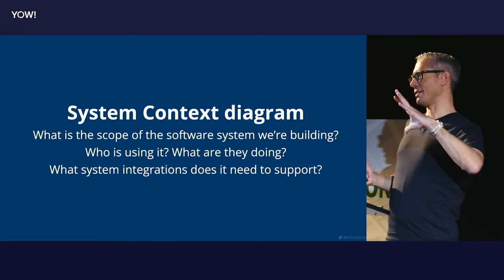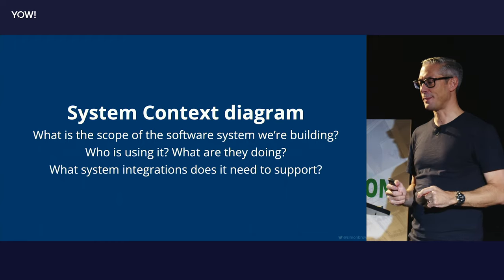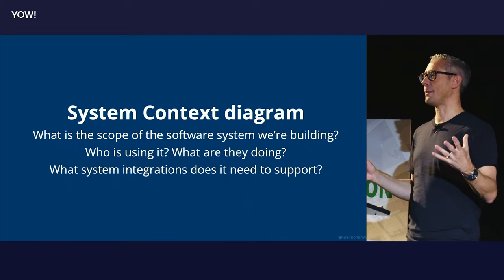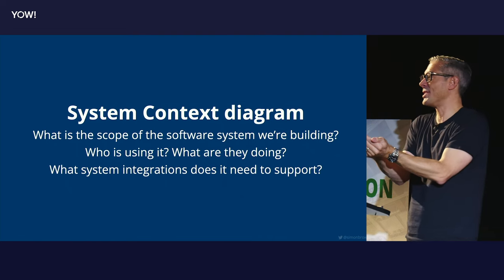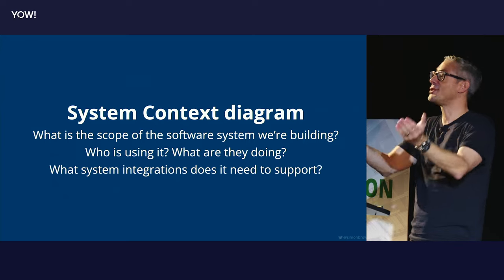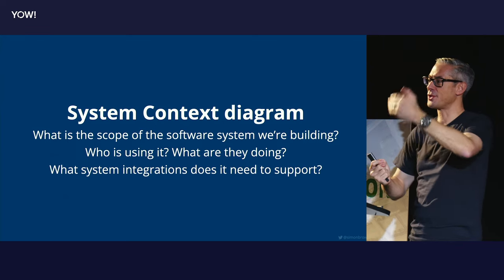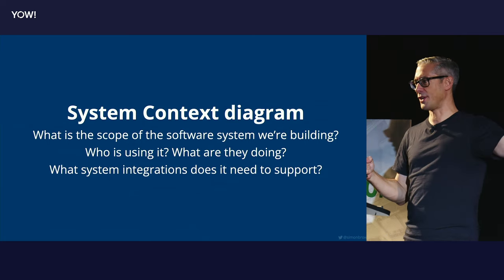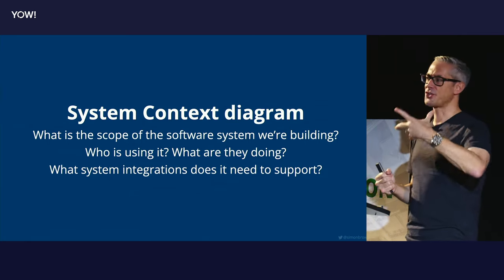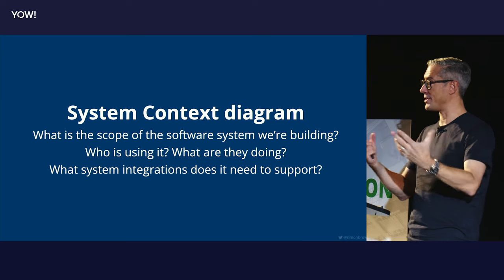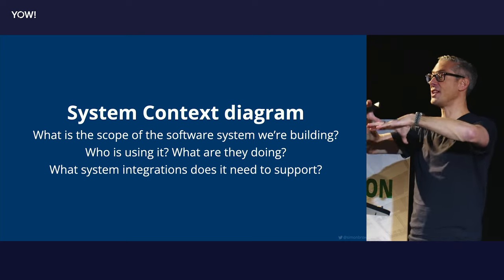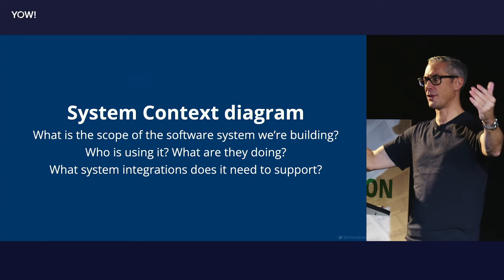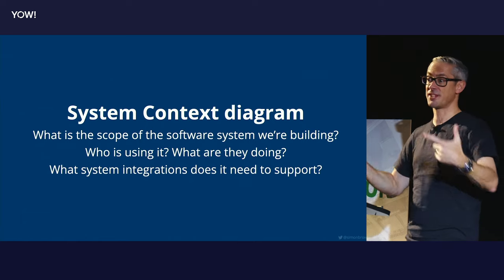The two diagrams I'm going to introduce quickly — I'll show you them during the demos. The first is called a system context diagram. A system context diagram basically shows you the system you are describing or designing and how it fits into the world around it in terms of users and other software systems. To draw a system context diagram, you need to answer some questions: what's the scope of the system we are documenting or designing?